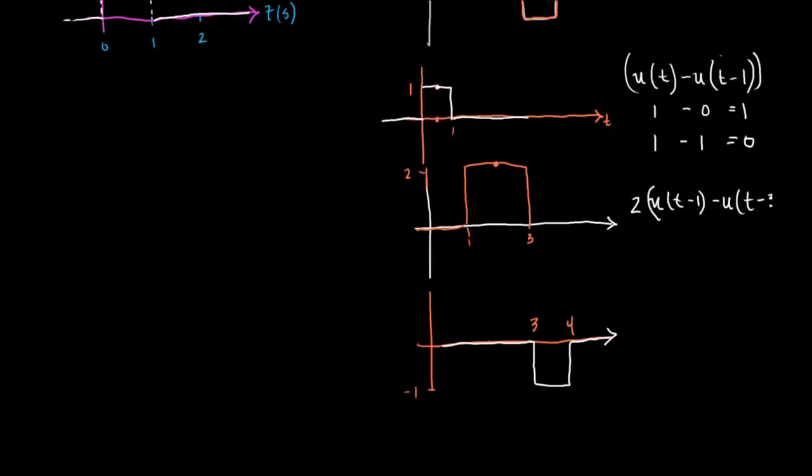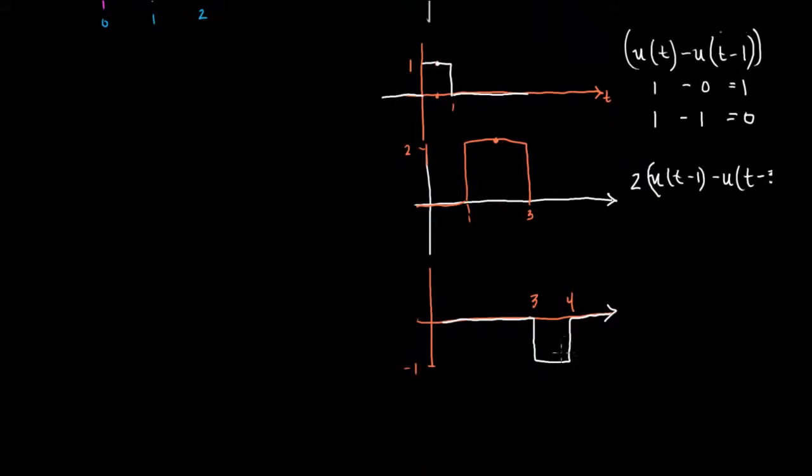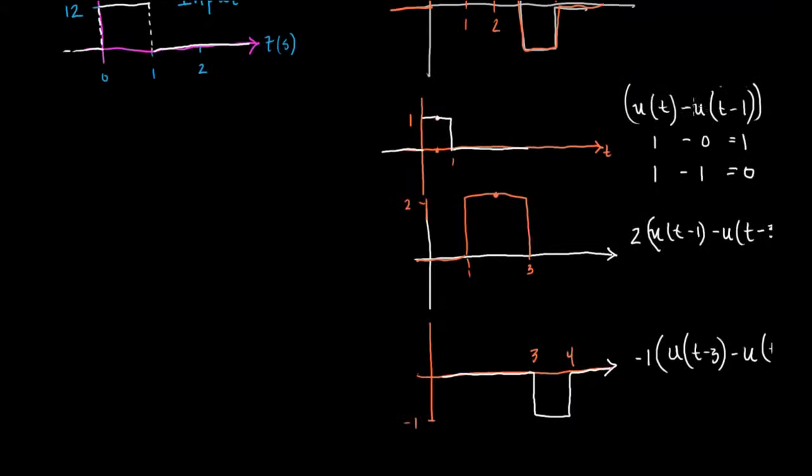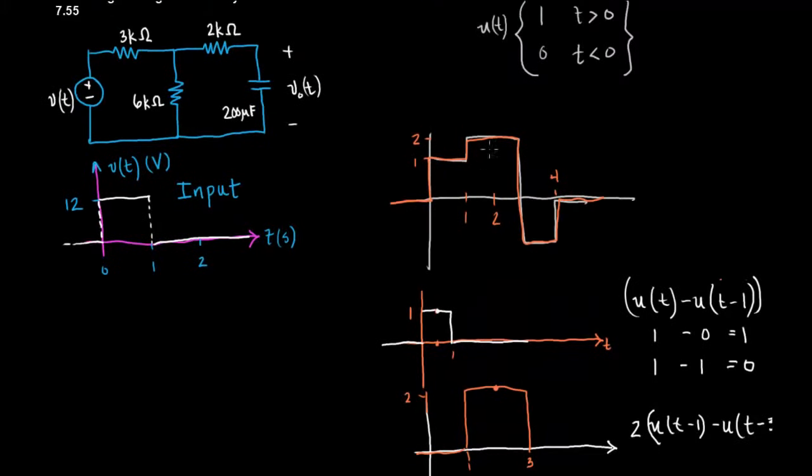And finally how would we do this one? You might be able to figure it out. We're going to multiply by a magnitude of minus one. U of t minus three minus u of t minus four. So finally we can take all three of these equations and add them together. And that will describe this function right here.